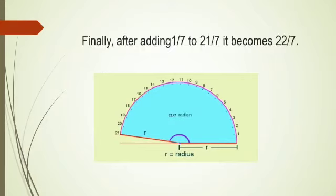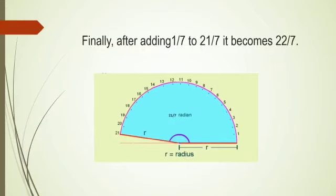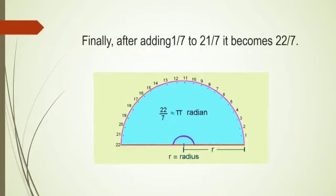We get 21 by 7. Finally, after adding 1 by 7 to 21 by 7, it becomes 22 by 7. Thus, 22 by 7 is approximately equal to pi radian.